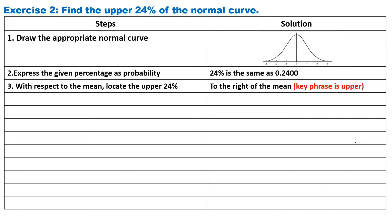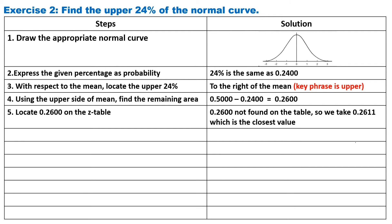With respect to the mean, locate the upper 24%. The key phrase is upper, so it is going to the right. Using the upper side of the mean, find the remaining area. So the remaining area is 0.5000 minus 0.2400 equals 0.2600.